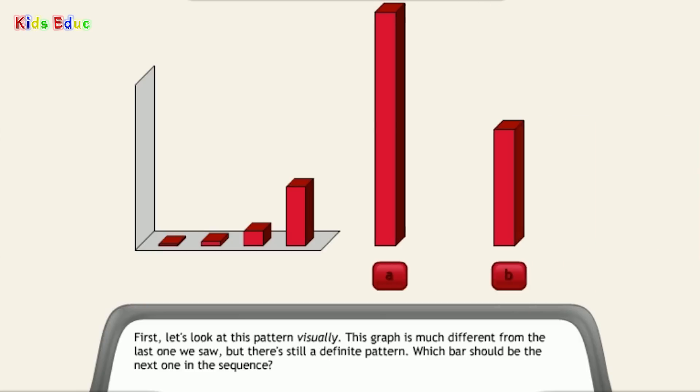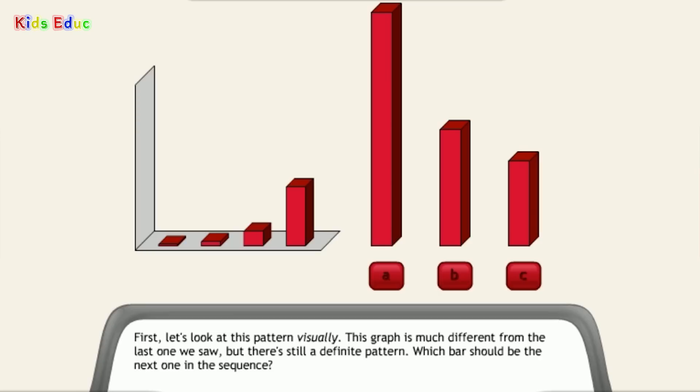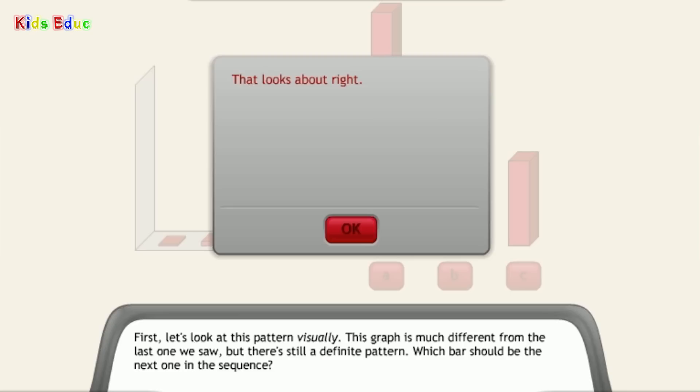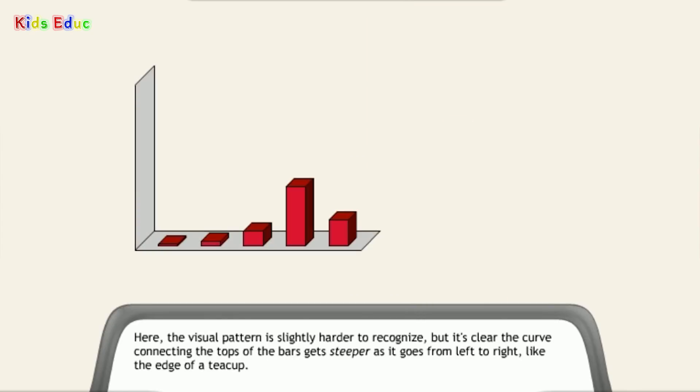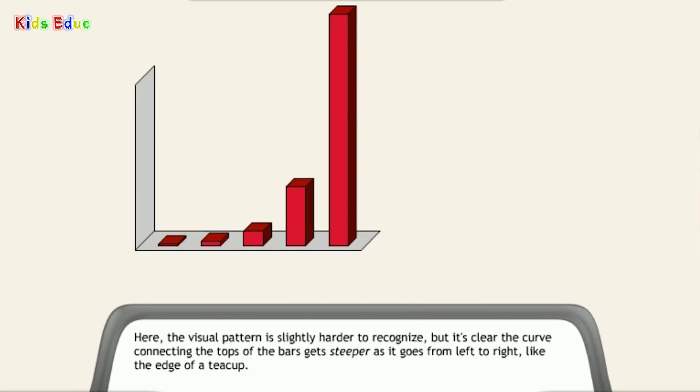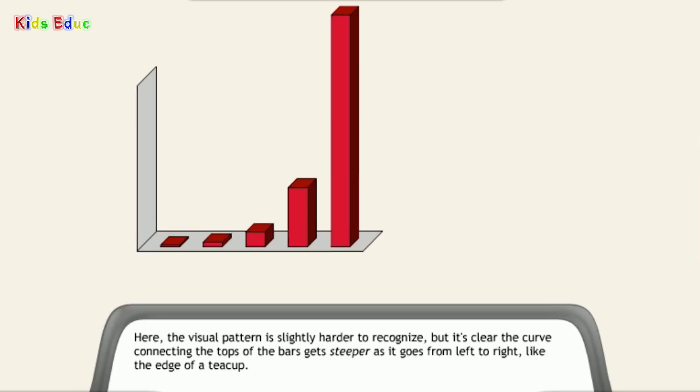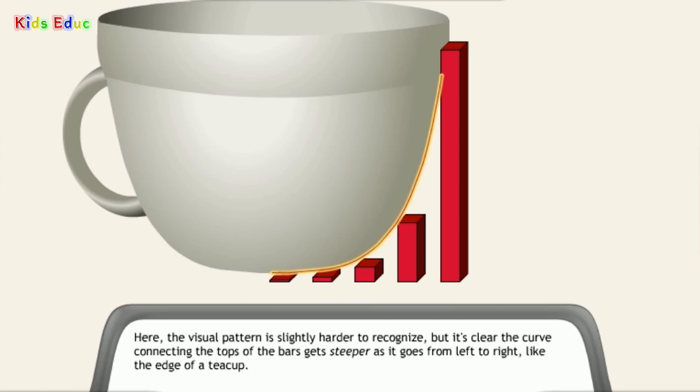Which bar should be the next one in the sequence? That looks about right. Here, the visual pattern is slightly harder to recognize. But it's clear the curve connecting the tops of the bars gets steeper as it goes from left to right, like the edge of a teacup.